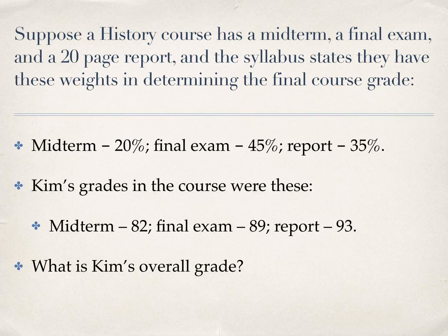In this next example, suppose a history course has a midterm, a final exam, and a 20-page report. The syllabus states they have these weights for determining the final course grade: the midterm counts as 20% of the final grade, the final exam counts for 45%, and the report counts for 35%.